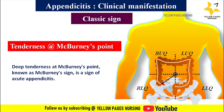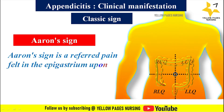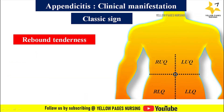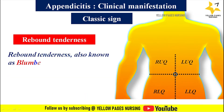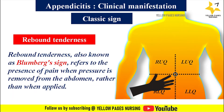The next classical sign is Aaron's sign. Aaron's sign is a referred pain felt in the epigastrium upon continuous firm pressure over McBurney's point. The next sign is rebound tenderness, also known as Blumberg's sign, which refers to the presence of pain when pressure is removed from the abdomen rather than when it is applied.